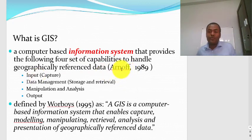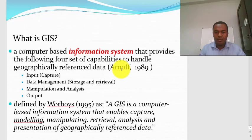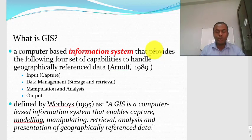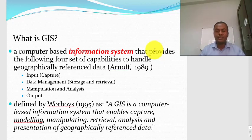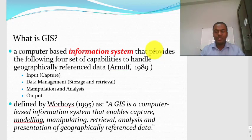What are the four sets of capabilities you can implement through GIS? The first is the capability to capture data — geographically referenced data. The second is the capability to manage data, which involves two issues: storage of data and retrieval of data. There are other similar packages like GIS which usually store their data, but have difficulty retrieving it. One of the things that makes GIS very powerful is its system to retrieve stored data.